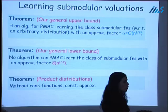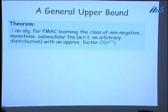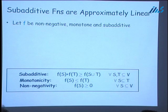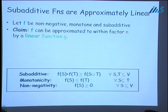I'll spend about 10 minutes talking about the key ideas proving these results, starting with the upper bound. Since it's simpler to think about, I'll first present a weaker upper bound for the more general class of sub-additive functions, and then describe how to modify the argument to get the square root of N upper bound for learning submodular functions. Here is a simple fact: any non-negative monotone sub-additive function can be approximated to within a factor of N by a linear function.